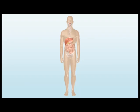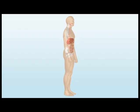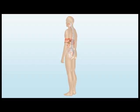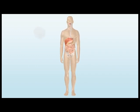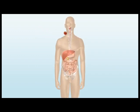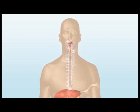Your digestive system consists of all the organs involved in breaking down the food you eat, absorbing nutrients and eliminating waste products. When you take a bite of food, your digestive system is activated automatically.